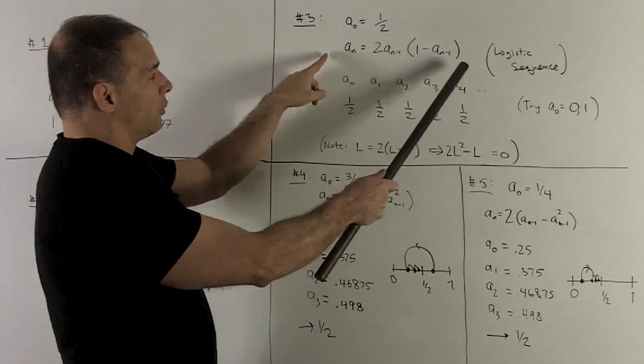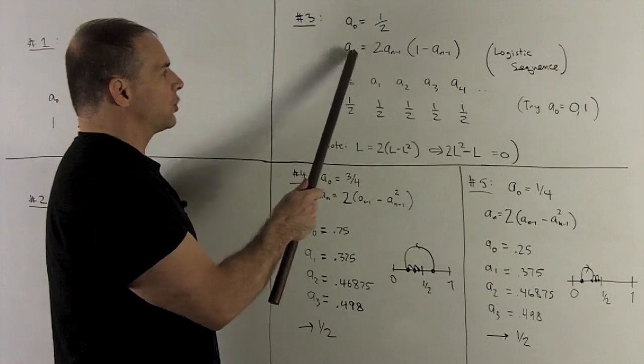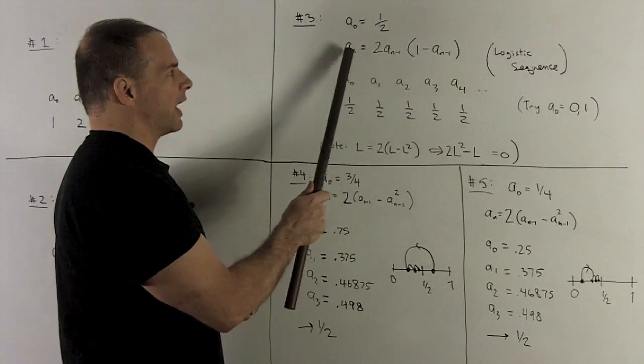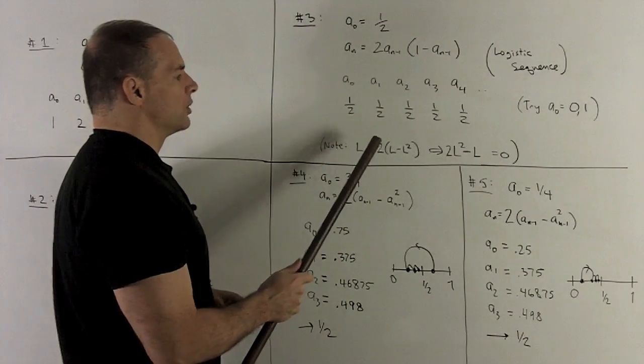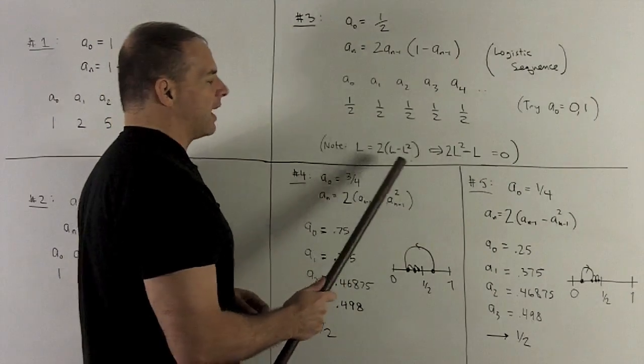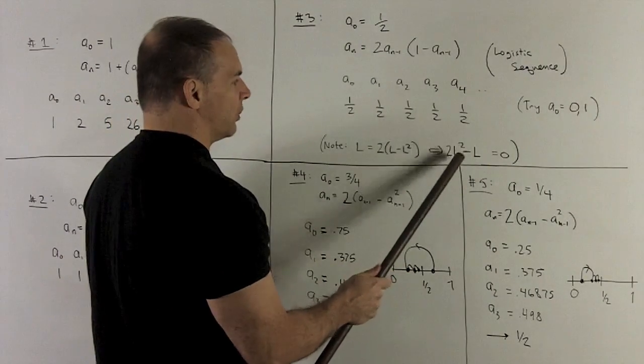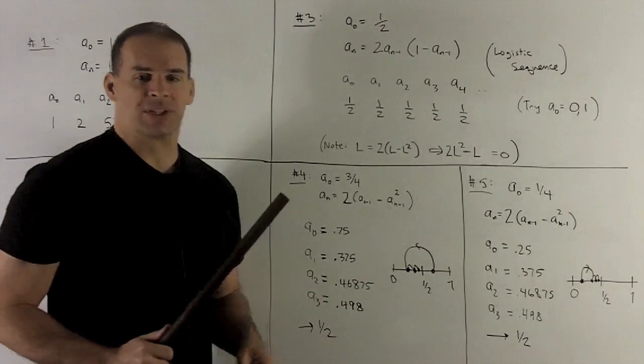If I take a look at my recursive relation and squint, and let's say we just call the a terms, regardless of whether they have n or n minus 1, L, that's going to give me the equation L equals 2 times L minus L squared. And then if I solve for that, the zeros are going to be 0 and 1 half. Okay, magically 1 half is doing something there.